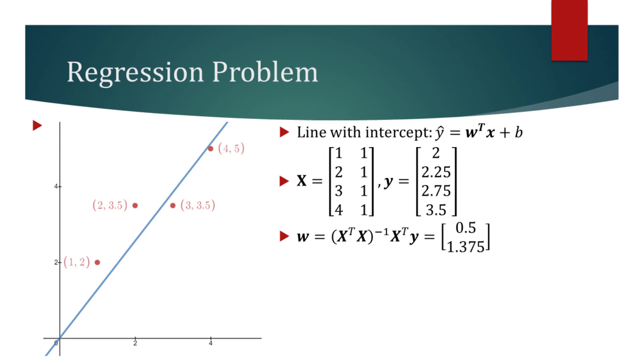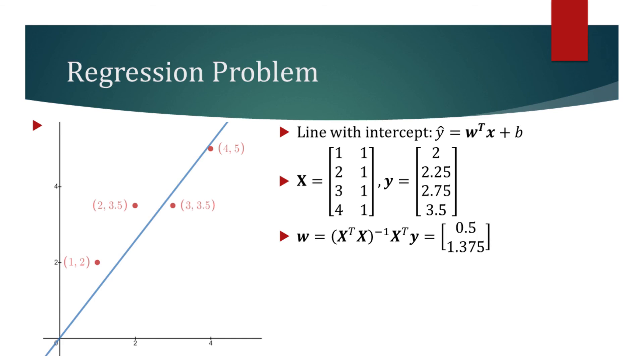To find b, we can augment the data points with an extra entry that is always equal to 1. The weight corresponding to this entry will be our intercept. Then, we solve for the weights again, but now with the augmented data points. We can now use these weights and derive a new equation of the line, but now with an intercept. The line in green corresponds to our recent line. It is easy to observe that it fits the data points better than the line without the intercept term.